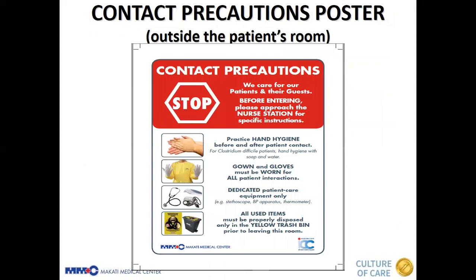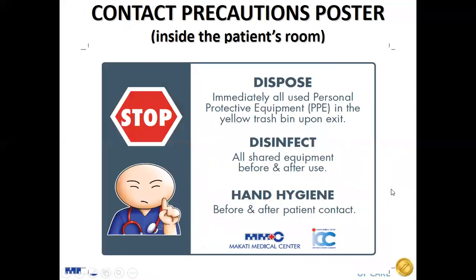This poster is posted outside the patient's room to remind staff to wear gown and gloves before entering. Dedicated patient care equipment should be used for patients on contact precaution, such as the stethoscope, blood pressure cuff, and thermometer. Yellow waste bins and linen bins are also placed by housekeeping inside the patient's room. Another poster inside the patient's room reminds staff to remove PPE before exiting, to disinfect all shared equipment before and after use, and to perform hand hygiene.